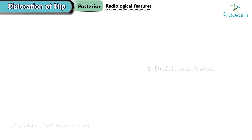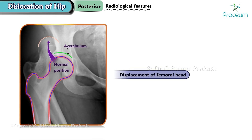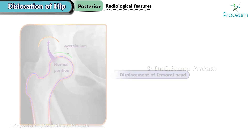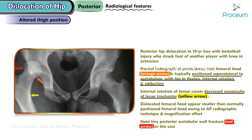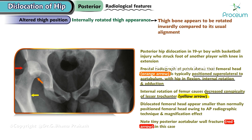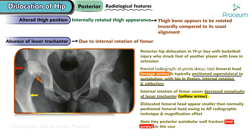Radiological features of posterior hip dislocations. The following key indicators can be observed in radiographic images. Displacement of femoral head: in a posterior hip dislocation, the femoral head is visibly displaced posteriorly, indicating that it has moved out of its normal position within the acetabulum. Altered thigh position: posterior dislocation often results in an internally rotated thigh appearance, meaning the thigh bone appears rotated inwardly compared to its usual alignment. Absence of lesser trochanter: due to the internal rotation of the femur, the lesser trochanter may not be visible on the radiograph.